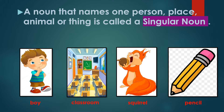A noun that names one person, that is a single person, one place, a single place, one animal, a single animal, or one thing, that is a single thing, is called a singular noun. A single person, place, animal or thing is called a singular noun.